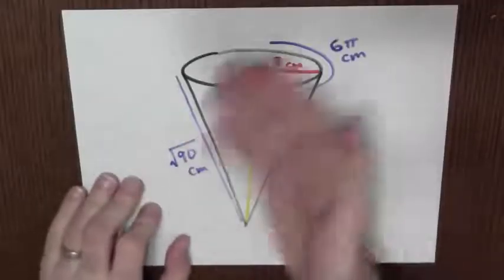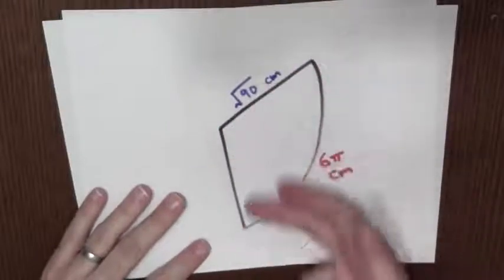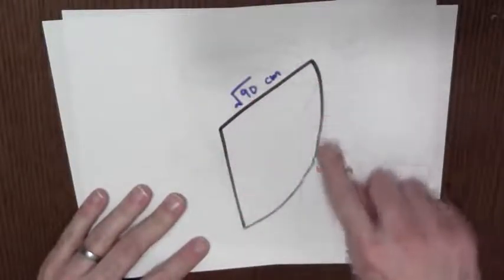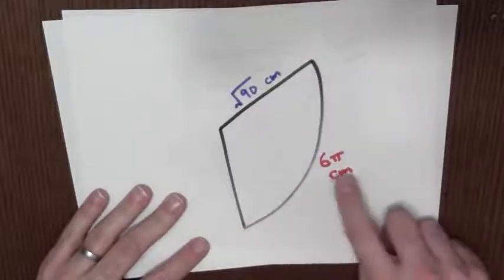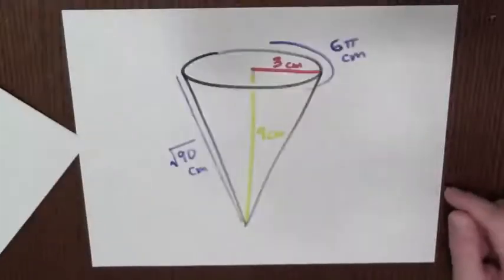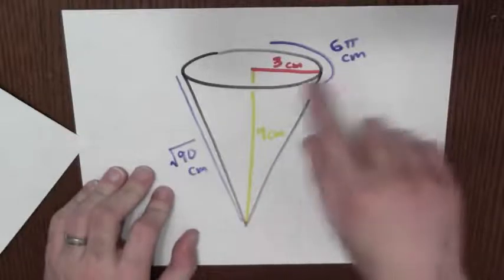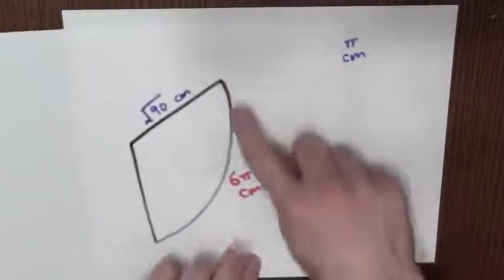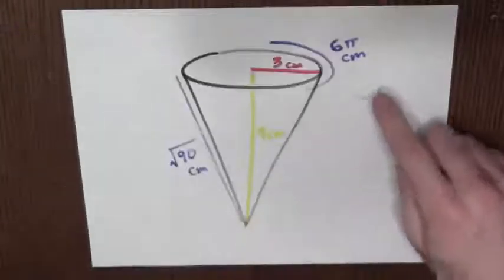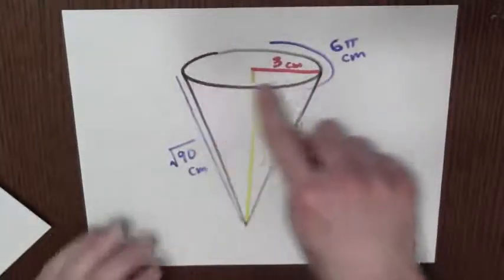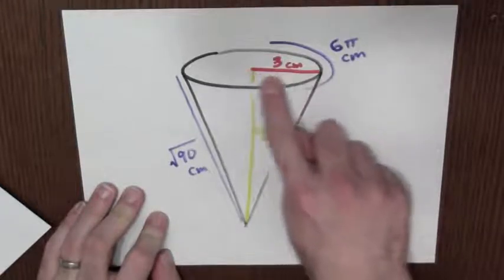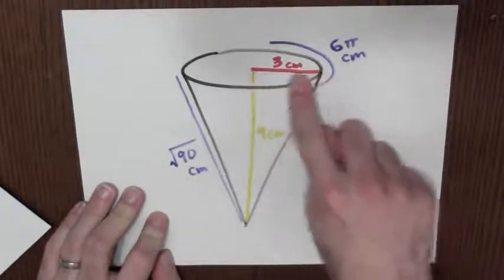First I'm going to draw a diagram of the cone. I built the cone out of this little piece of a circle with radius square root 90 centimeters, and the arc length is 6 pi centimeters. That's enough information to figure out the shape of the resulting cone. Since the curved part here is 6 pi centimeters, that tells me the circumference of this top circle of the cone is 6 pi centimeters. That tells me the radius is 3 centimeters.